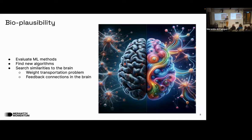The brain also has feedback connections: neurons go from the eye to the brain to process signals, but also neurons go the other way, from the brain back toward the eye. They do some predictive coding — predicting the future — and also change the activations of neurons.